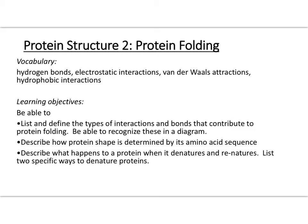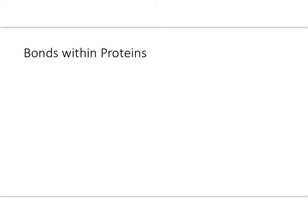This video is protein structure 2. We're going to talk about several different types of bonds that are found within proteins. These bonds are all types of interactions, actually, so bonds is not such a great name for them, and they're all between the side chains of the amino acids.